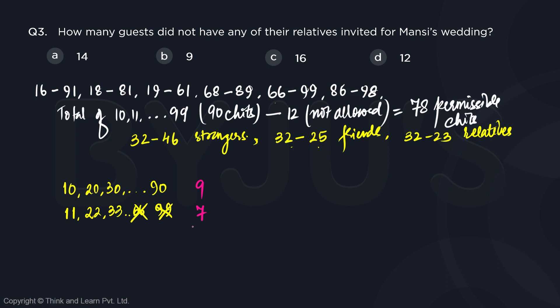So what we observe is we will not find any more. So we will have a total of 16 such guests who will have no relatives that are invited for Mansi's wedding. So answer is going to be option C.